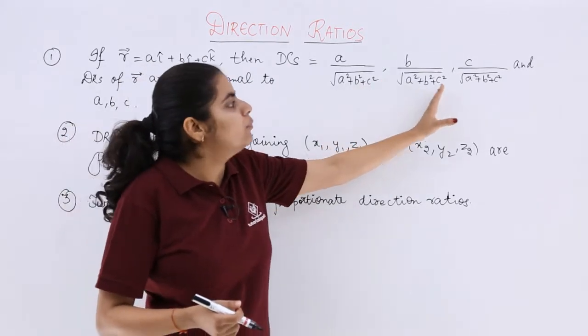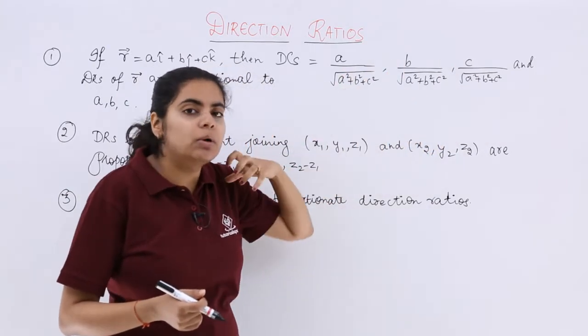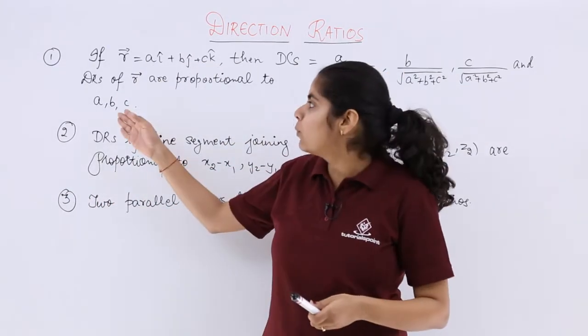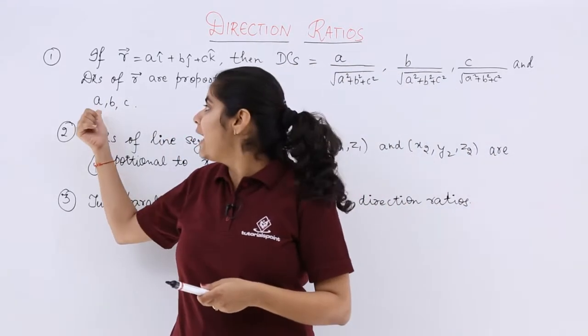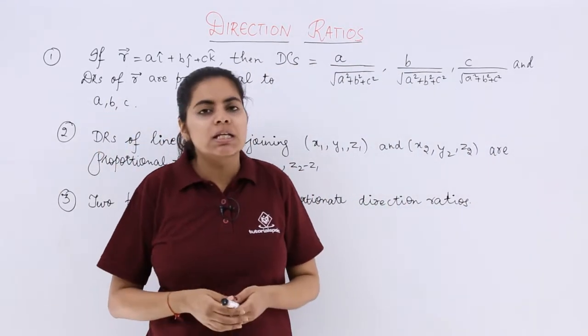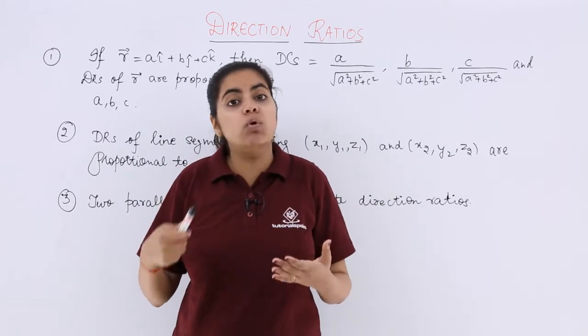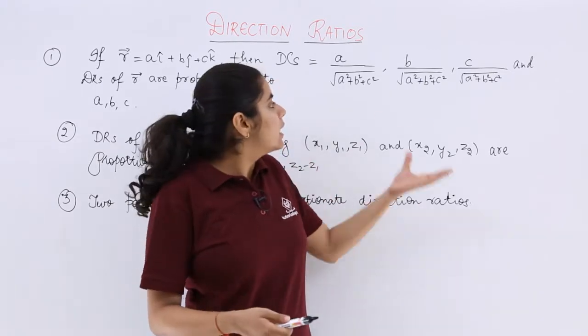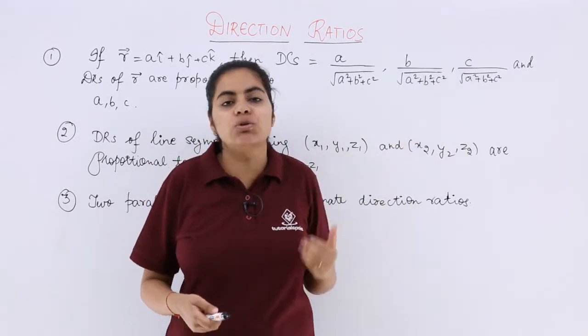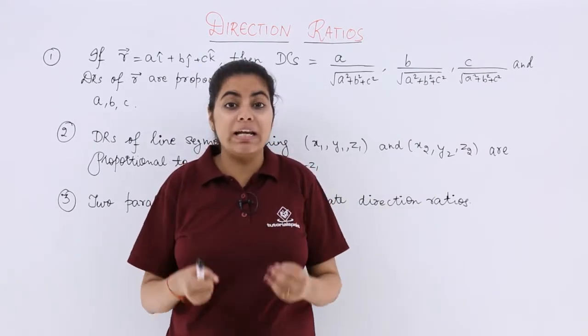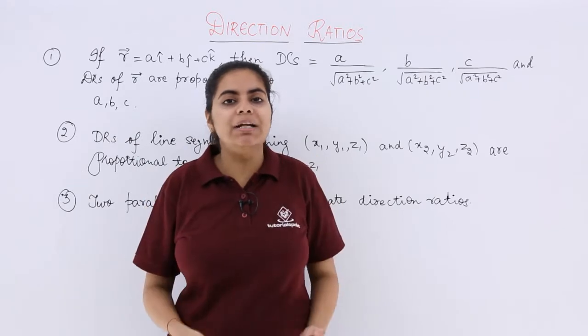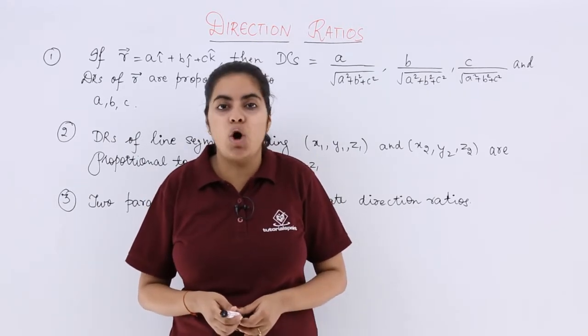So this is L, this is M, this is N and what about the direction ratios? They are simply proportional. So direction ratios are proportional to a, b and c. So that means what? Are proportional to a, b, c means that if you have direction cosines given in front of you, you can simply find out direction ratios by multiplying the direction cosines with a common factor.